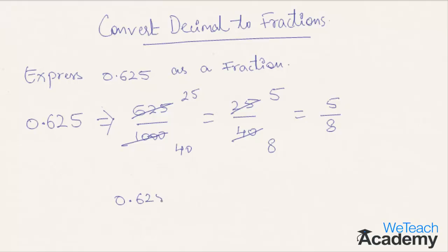The fractional form of 0.625 is 5/8. Hope you understood the concept of converting decimal numbers into fractions. Please like and subscribe to WeTeachAcademy.com. Thanks for watching, have a nice day!